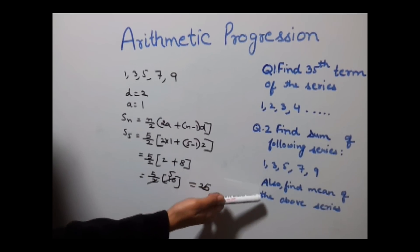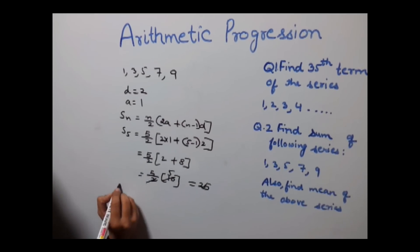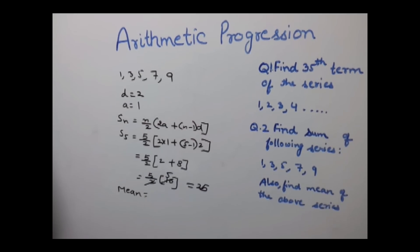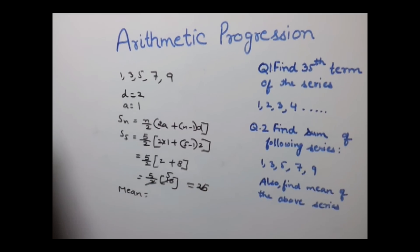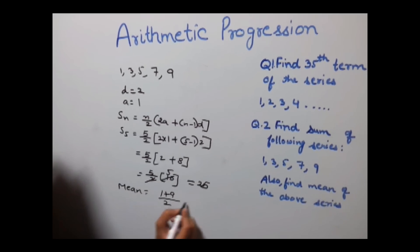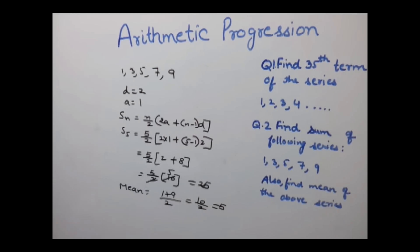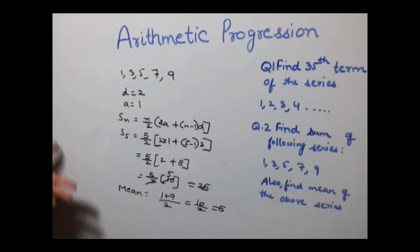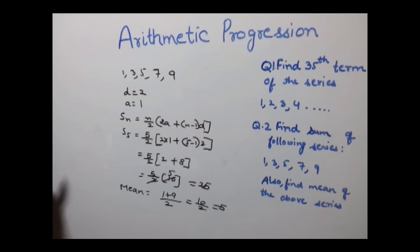We also need to find the mean of the above series. To calculate the mean, add any two corresponding numbers and divide by 2. Taking 1 and 9 as corresponding terms: (1 + 9) / 2 = 10 / 2 = 5. The mean is 5. I hope you have understood the basic concept of AP. For more complex examples, we will come back with a new class. Thank you.